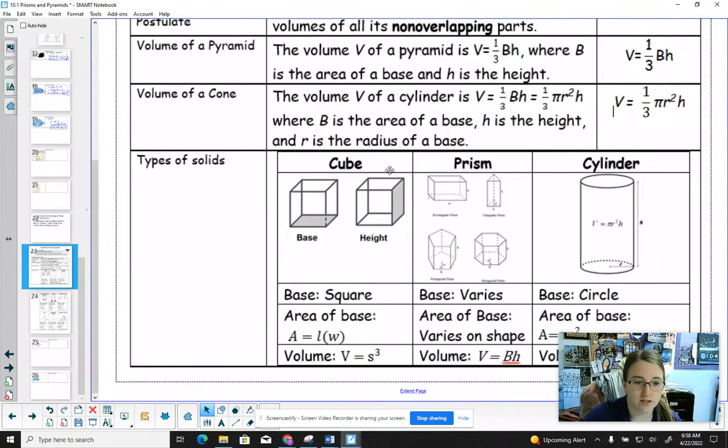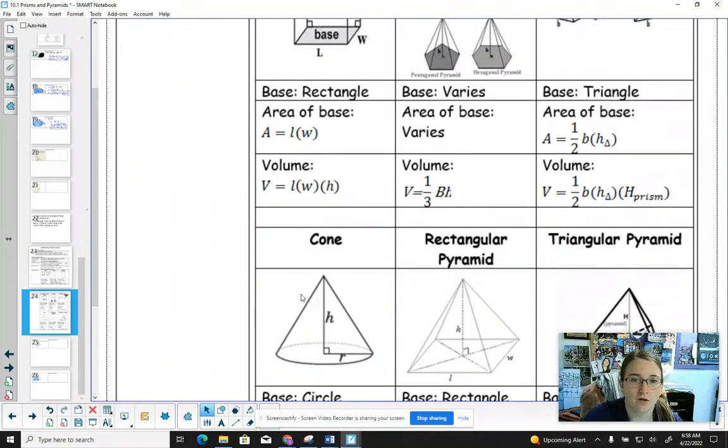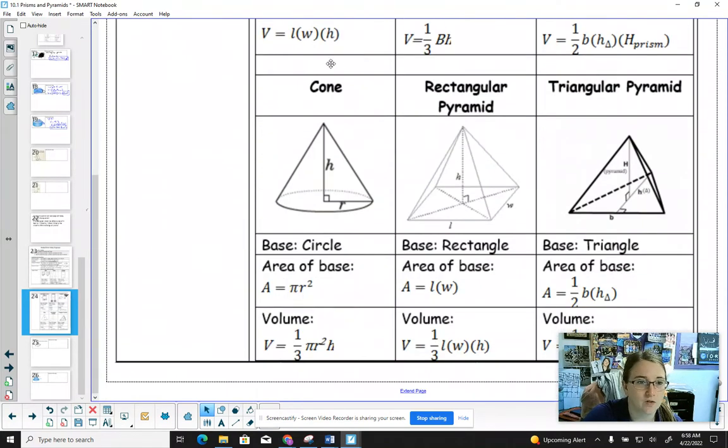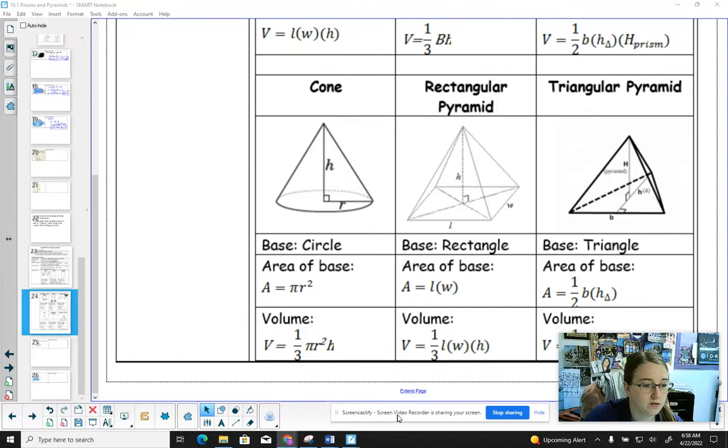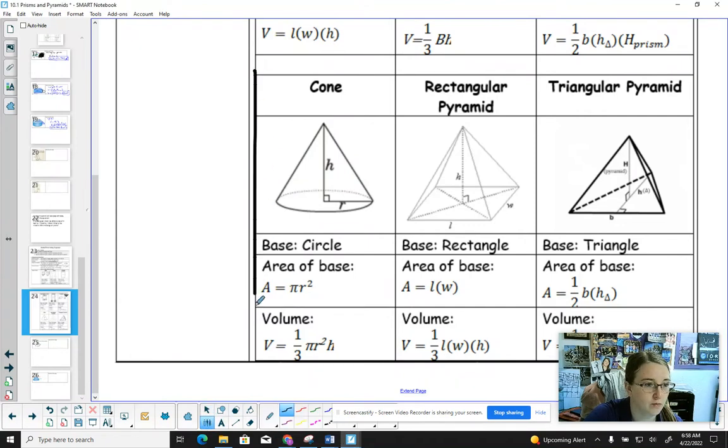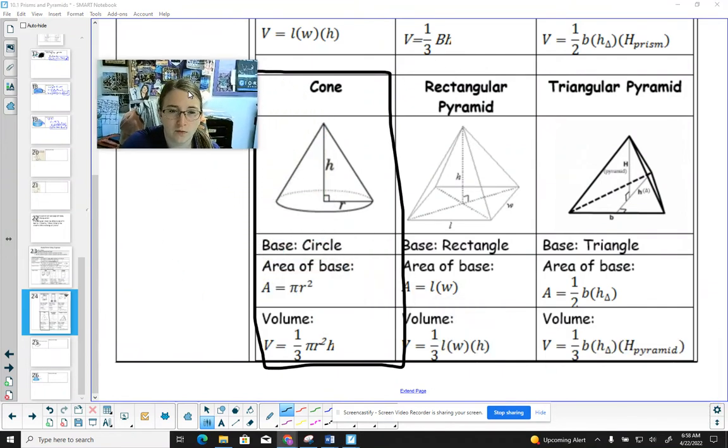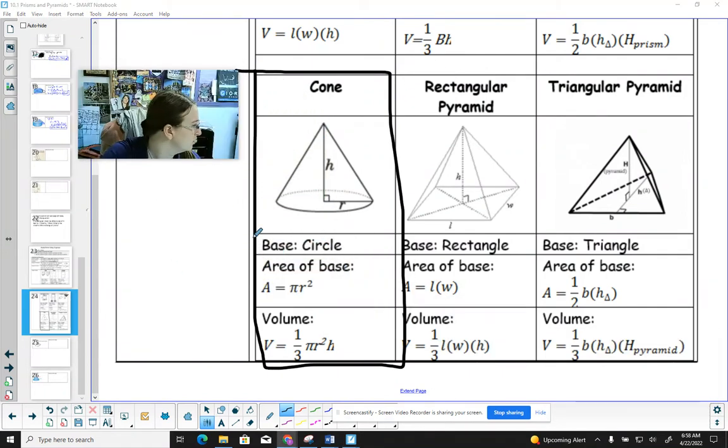So again, on your formula sheet, we've already talked about cylinder and prisms. On your formula sheet, you should see now as well volume of a cone. This is what is on your formula sheet here. A rectangular pyramid and a triangular pyramid.